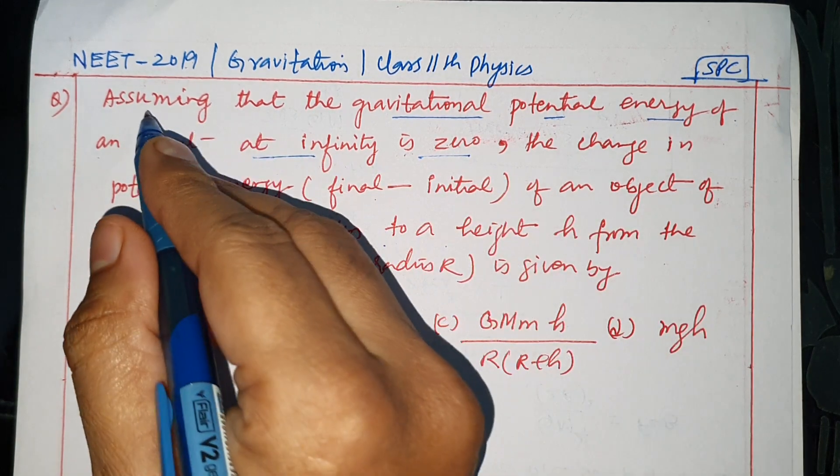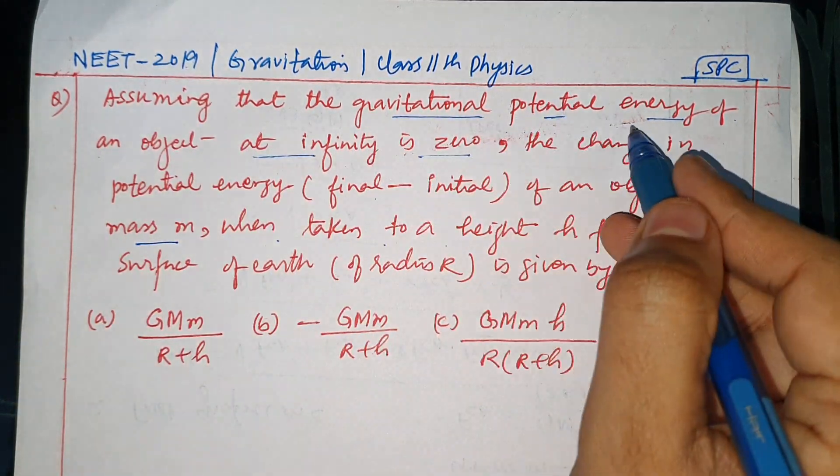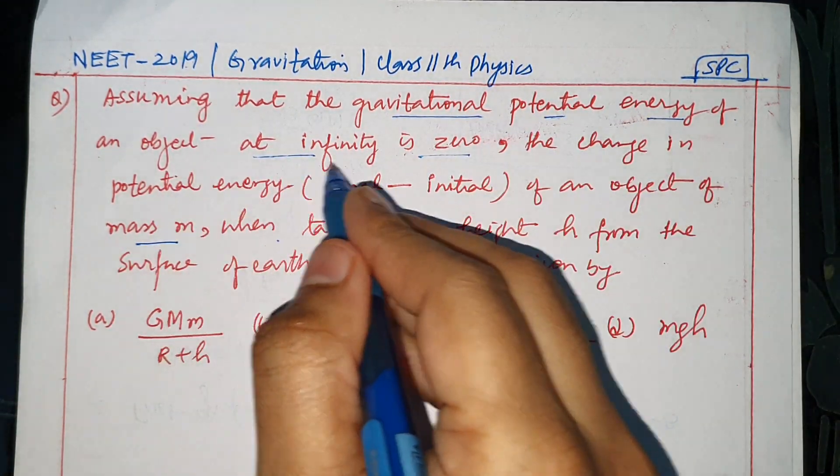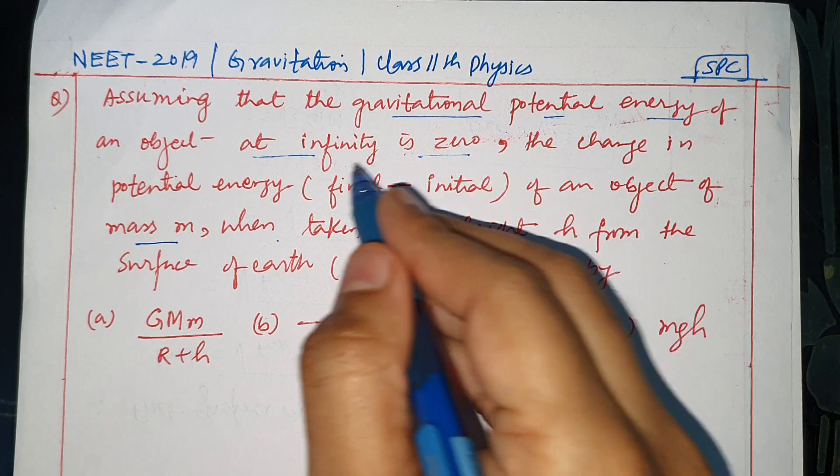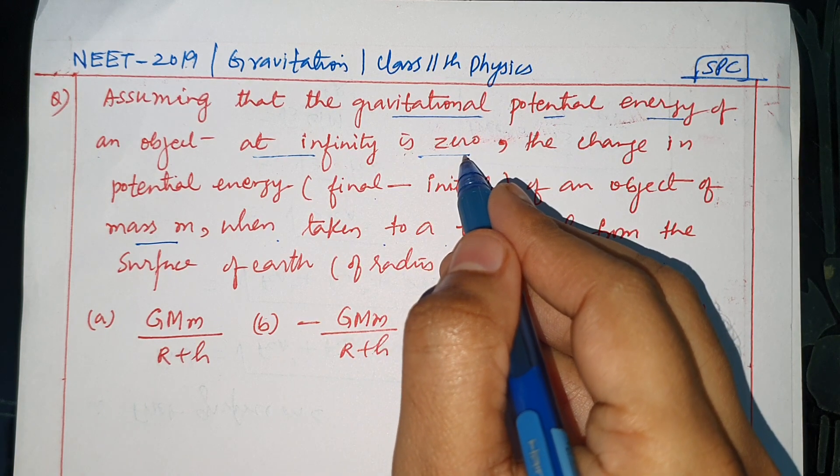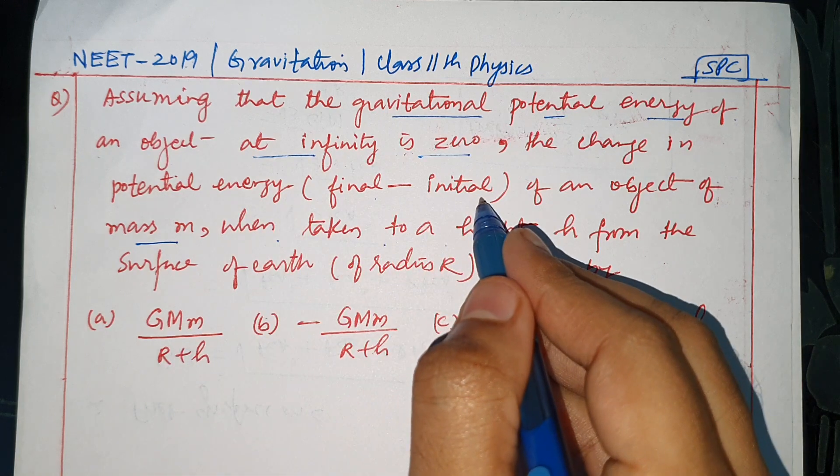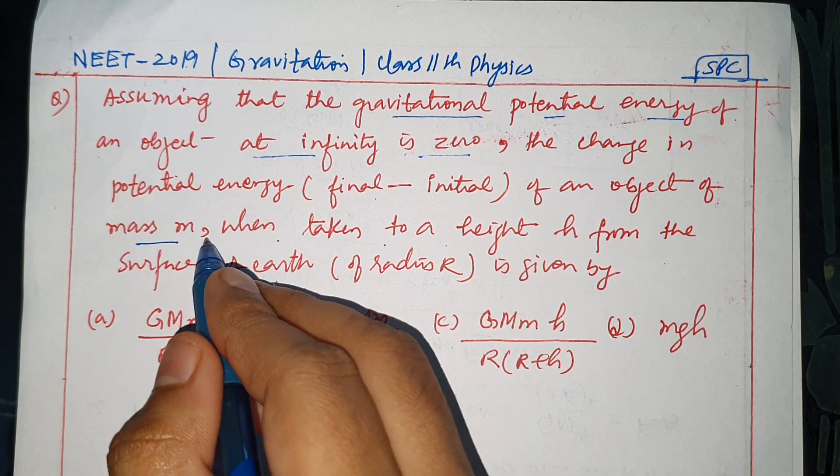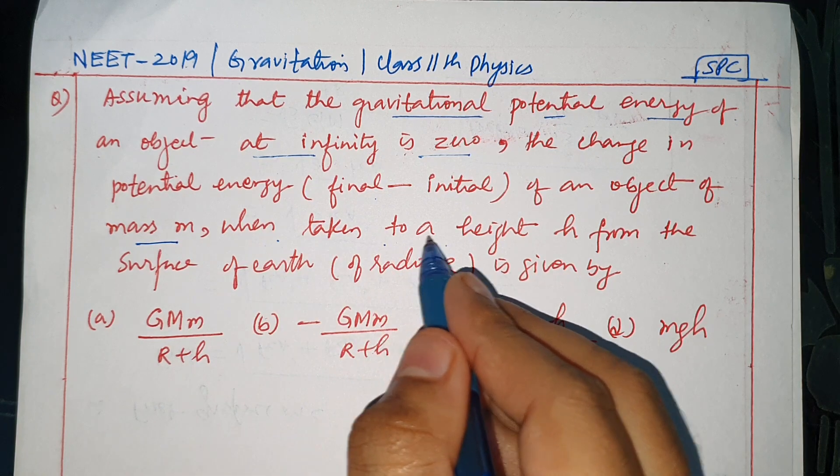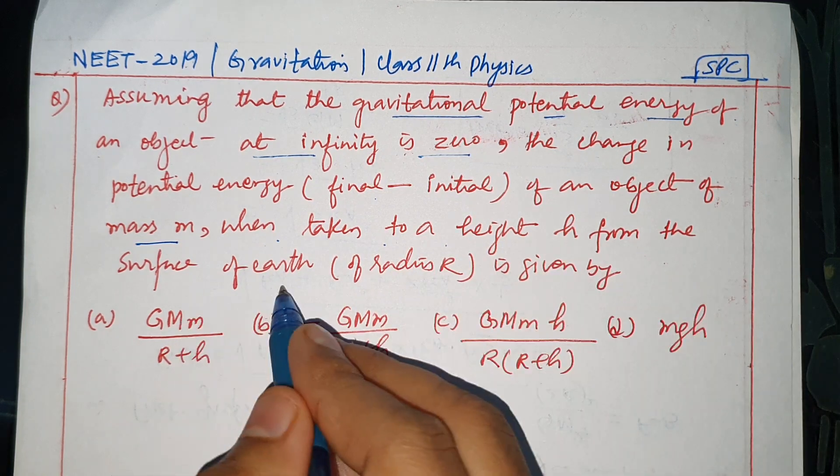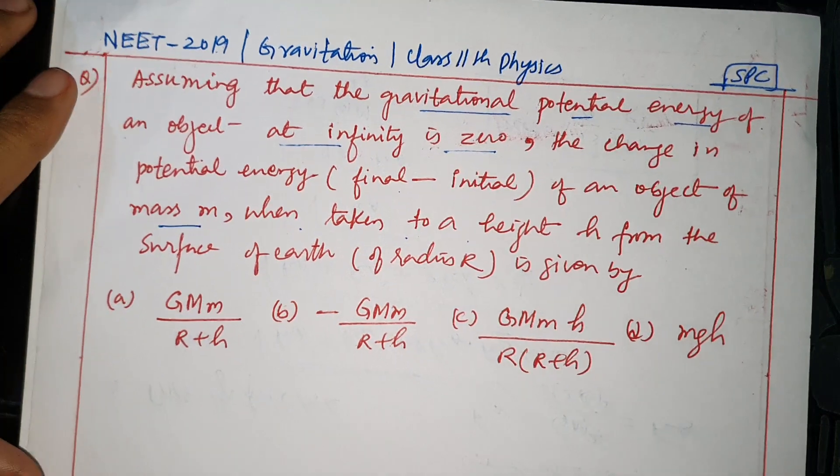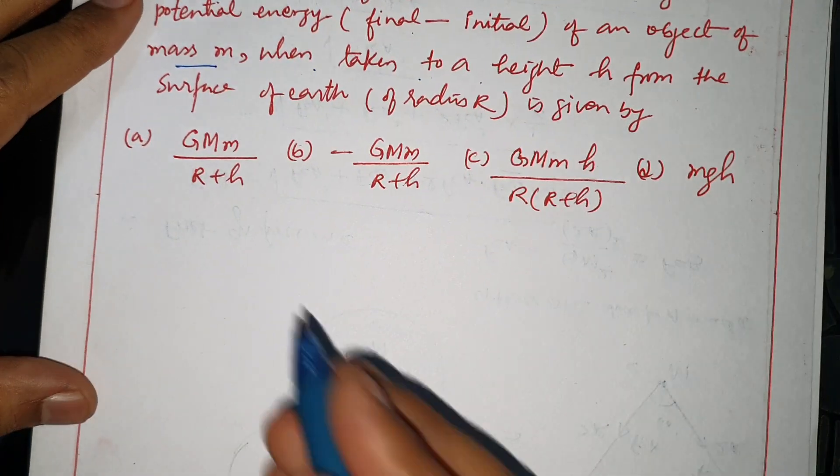Gravitation question: Assuming that the gravitational potential energy of an object at infinity is zero as reference point, the change in potential energy, final minus initial, of an object of mass m when taken to a height h from the surface of earth of radius R is given by?